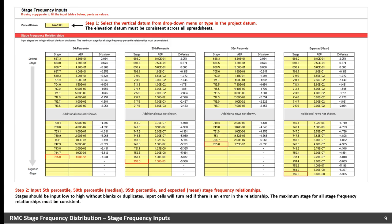The first step to using the spreadsheet is to select a vertical datum from the drop-down menu. If the datum you need is not listed, you can type it into the box. The elevation datum used must be consistent across all the different spreadsheets used in the analysis. Next, input the 5th, 50th, and 95th percentile stage frequency relationships along with the expected or mean stage frequency relationship into the tables.